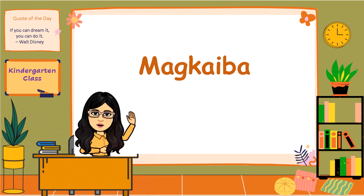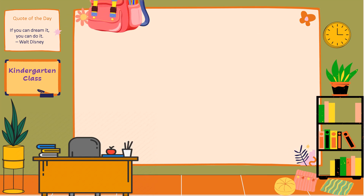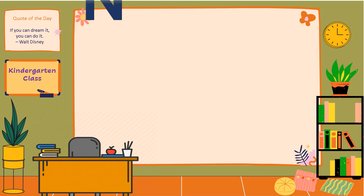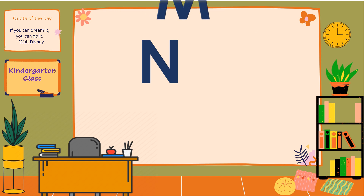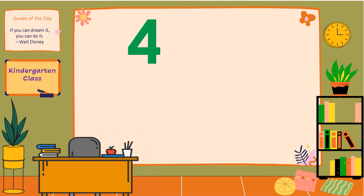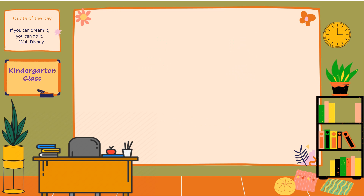Magkaiba — magkaiba ang bagay kung ito ay hindi pareho ang kulay, hugis, pagkakasulat, at anyo. Narito ang ilang mga halimbawa ng magkaiba: ang bag at bota, ang letrang N ay magkaiba sa letrang M, ang bilang apat ay magkaiba sa bilang dalawa, at ang salitang bola ay magkaiba sa salitang lobo.